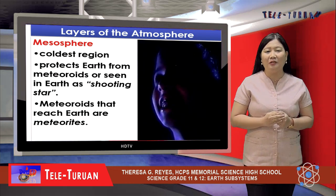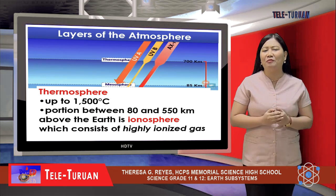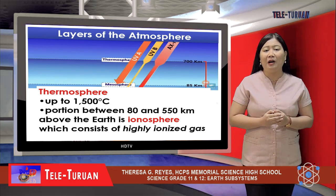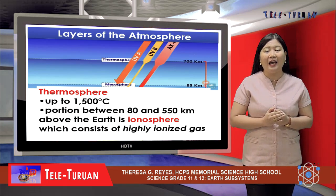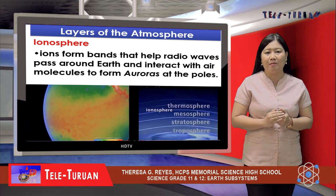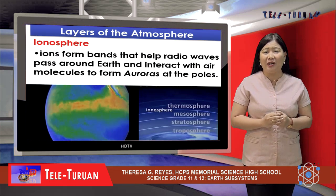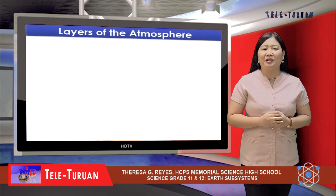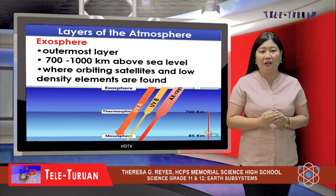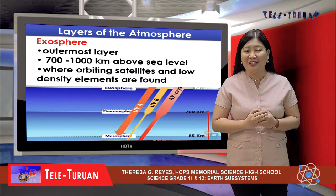Meteoroids that manage to reach Earth are called meteorites. Beyond the mesosphere is the thermosphere, with temperatures up to 1,500 degrees Celsius. The portion between 80 and 550 kilometers above the Earth is the ionosphere, which consists of highly ionized gas. The ions in the ionosphere form bands that help radio waves pass around Earth and interact with air molecules to form colorful displays of light called auroras at the poles. The exosphere is the outermost layer of Earth's atmosphere, above 700 up to 1,000 kilometers above sea level, where most orbiting satellites and low-density elements like hydrogen and helium are found.